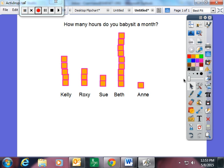The first way is called fair share. You take all of the data that you are given. For example, in this case, how many hours do you babysit a month? Kelly babysat for five hours, Roxy three, Sue two, Beth did nine, and Ann did one.